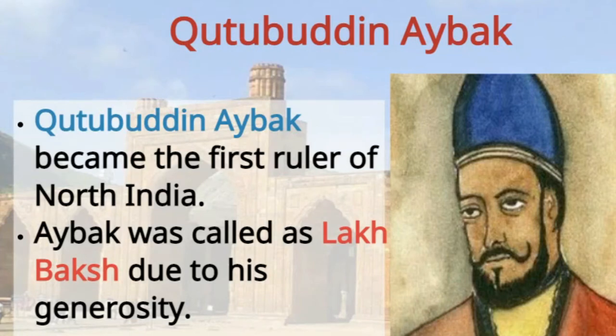Let us now have a look at the main rulers of the Sultanate period. The first ruler was Qutbuddin Aibak. He ruled for about 4 years and he was called Lakh Baksh, which means giver of lakhs, because he used to give lakhs in charity.